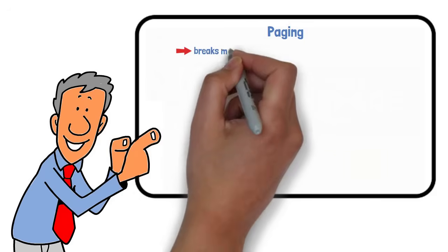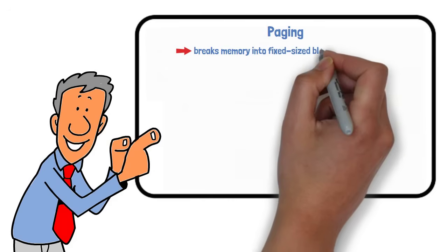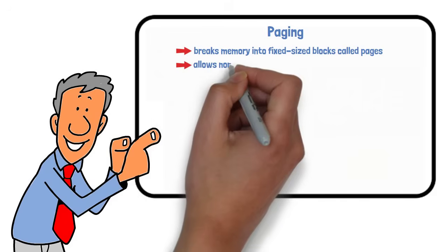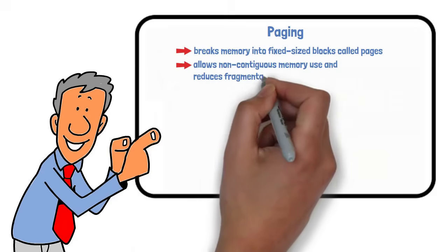Paging breaks memory into fixed-size blocks called pages. It allows non-contiguous memory use and reduces fragmentation.